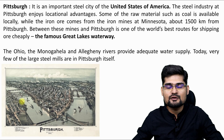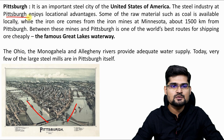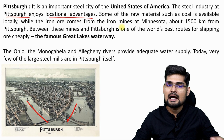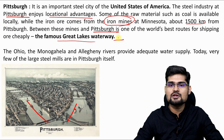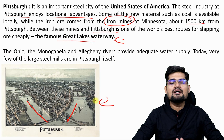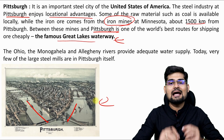A similar kind of locational advantage is seen in Pittsburgh. Pittsburgh enjoys locational advantages in the US — it takes iron ore from as far as 1,500 kilometers away, from the Minnesota iron mines, and then it is processed at Pittsburgh. The famous Great Lakes waterway gives it this locational advantage. So everywhere in the world where iron and steel industry is located, raw material, its transportation and circulation becomes really important.